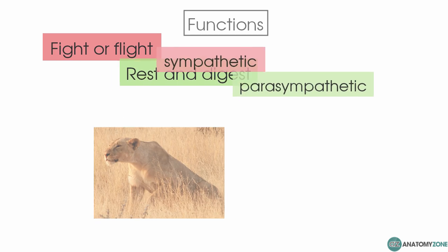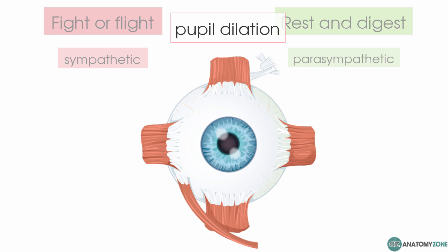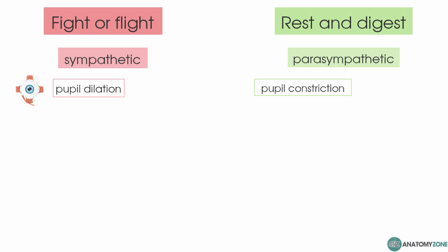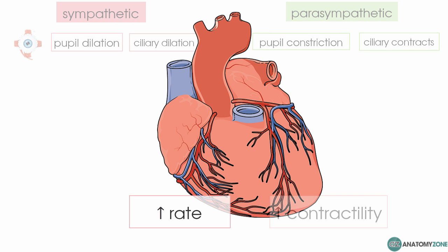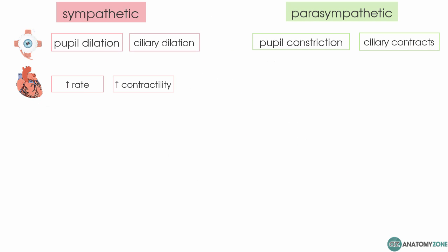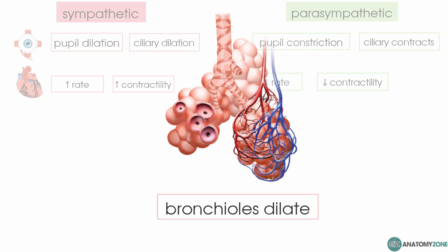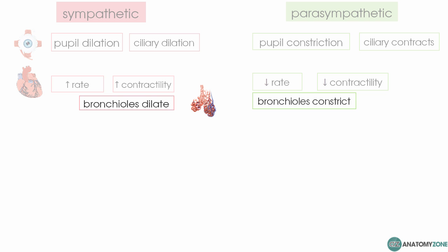In response to fight or flight mode, you get pupil dilation, which allows more light into the eye and increases visual acuity. The parasympathetic does the opposite and constricts the pupils. With regard to the eye, the sympathetic nervous system dilates the ciliary muscle allowing far vision, whereas the parasympathetic acts on the ciliary muscle to contract it and provide near vision. You also need to increase heart rate and contractility to increase cardiac output — the sympathetic increases these whereas the parasympathetic decreases both. In the lungs, sympathetic activation dilates the bronchioles to allow more oxygen into the body, whereas the parasympathetic causes constriction of the bronchioles.